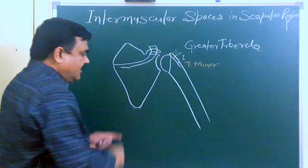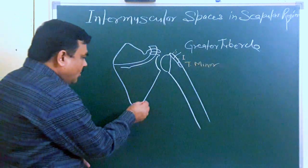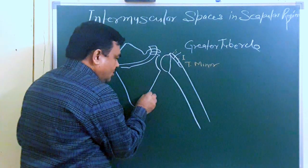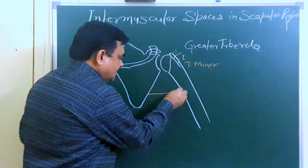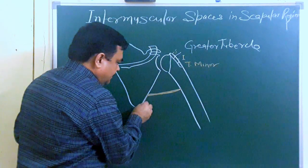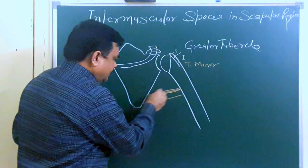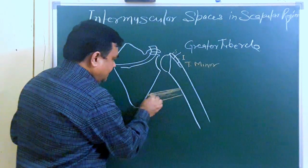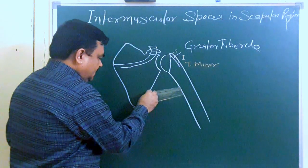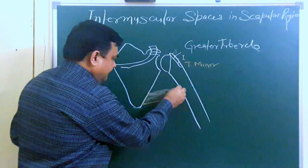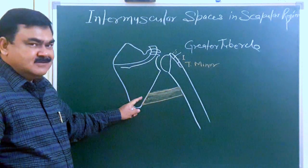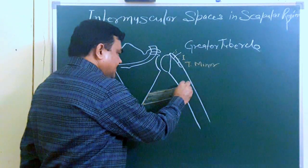This is the lateral border of the scapula. In the lower part of the lateral border of the scapula, one muscle takes origin. This muscle is teres major — it takes origin from the lower part of the lateral border of the scapula and is inserted on the medial lip of the bicipital groove.